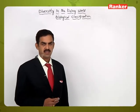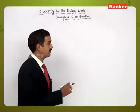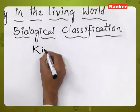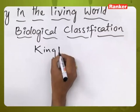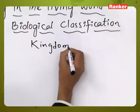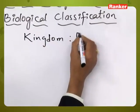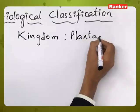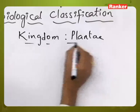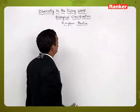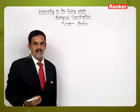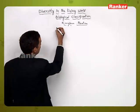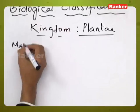In the biological classification, the next kingdom is Kingdom Plantae. Kingdom Plantae includes all multicellular eukaryotic plants.